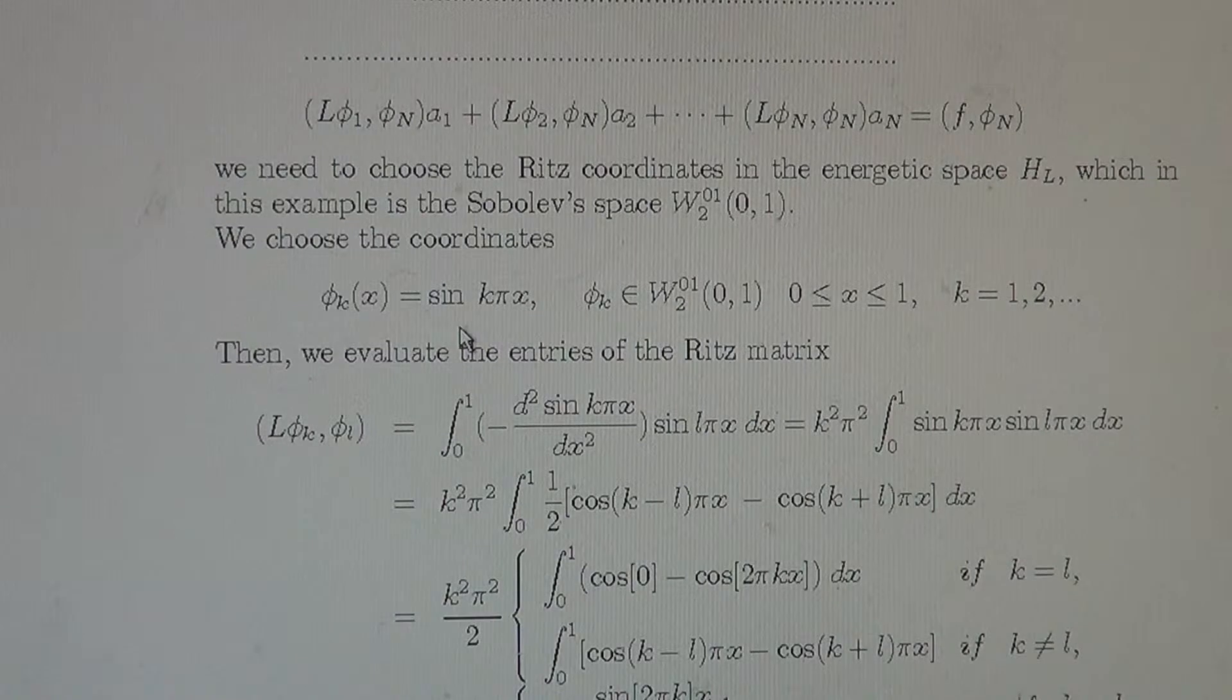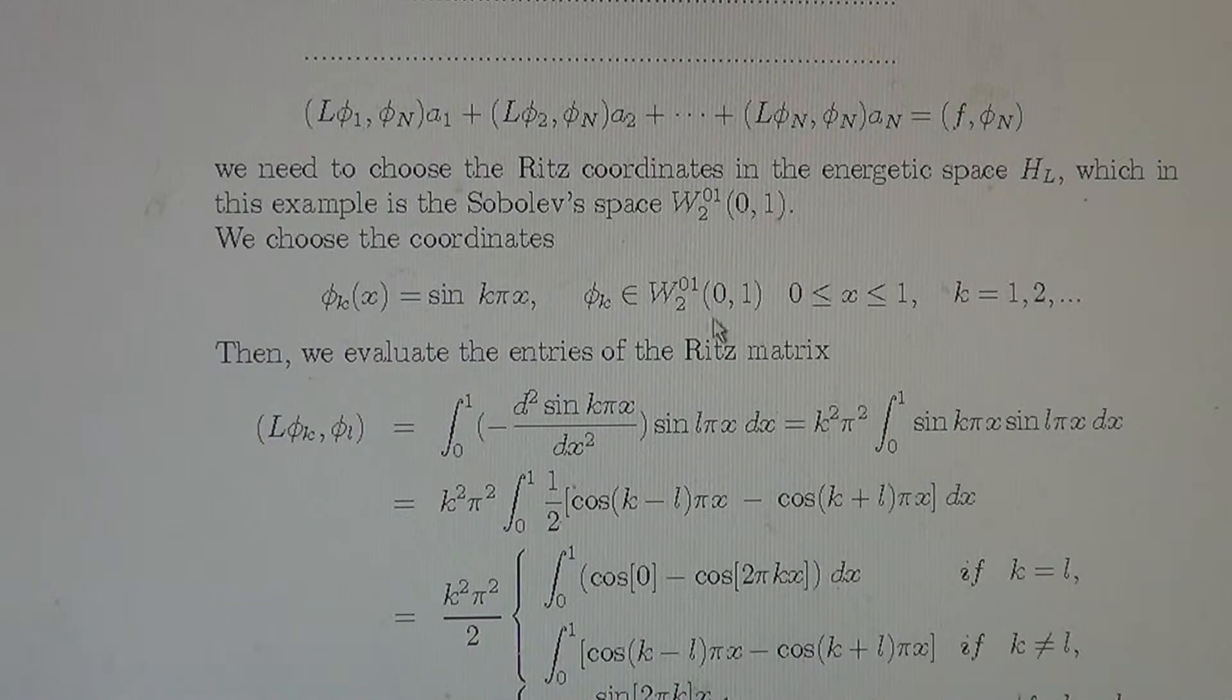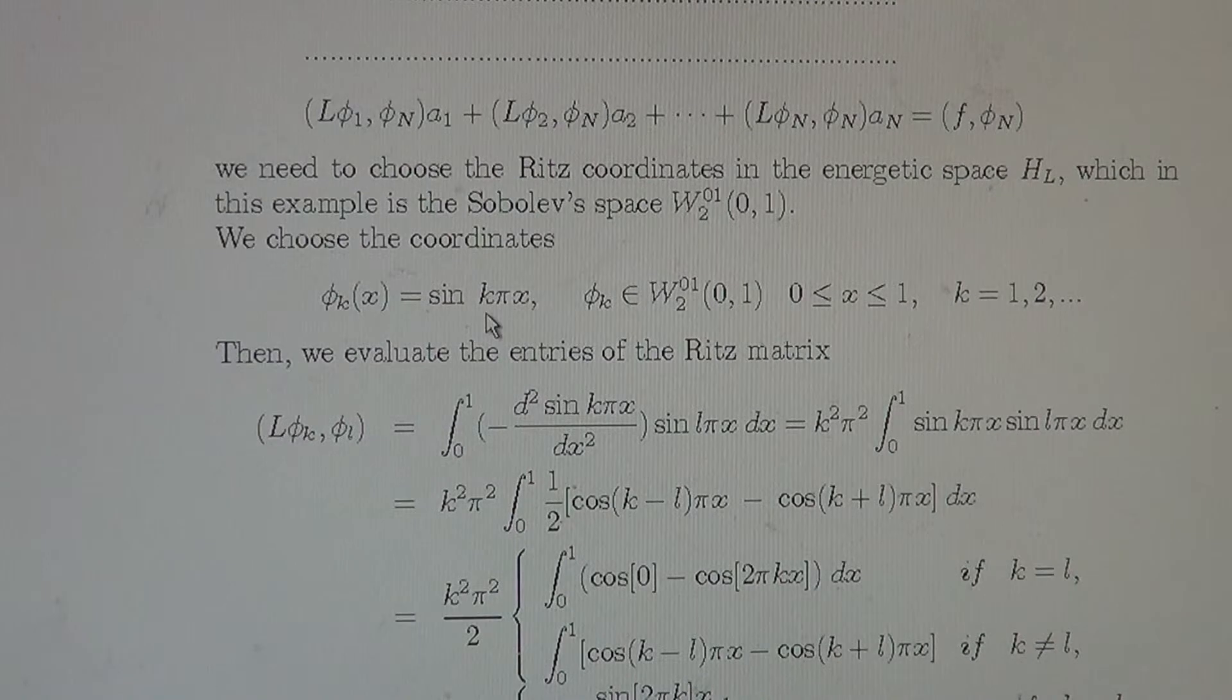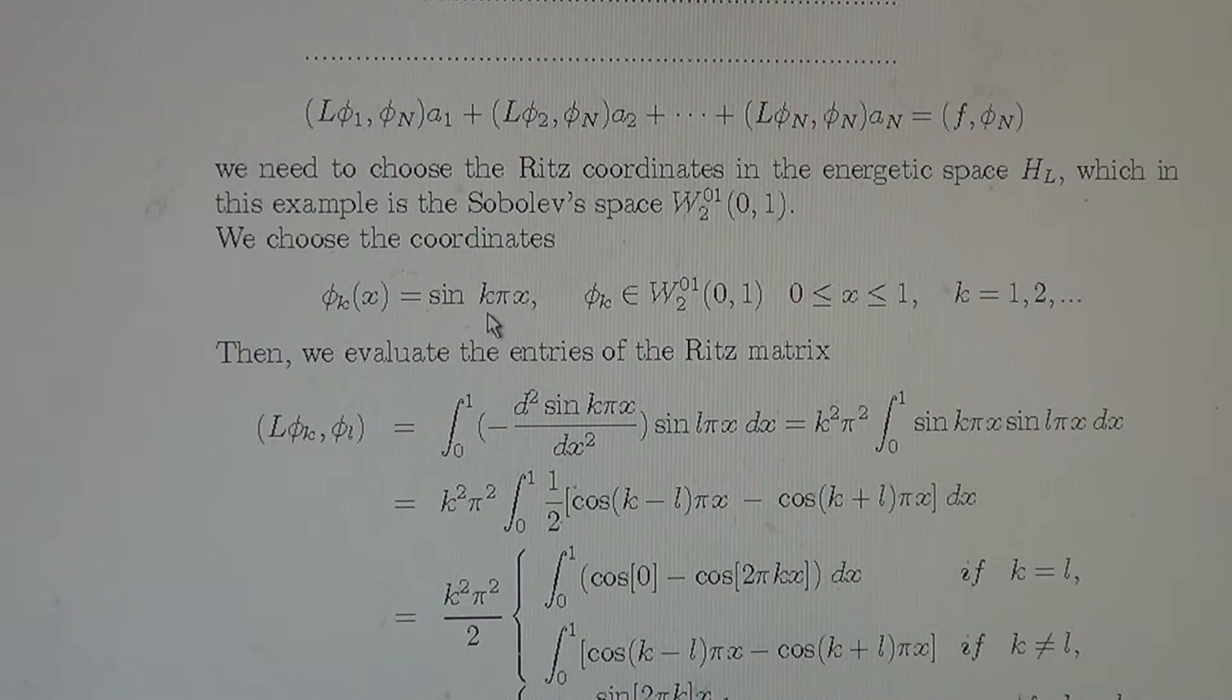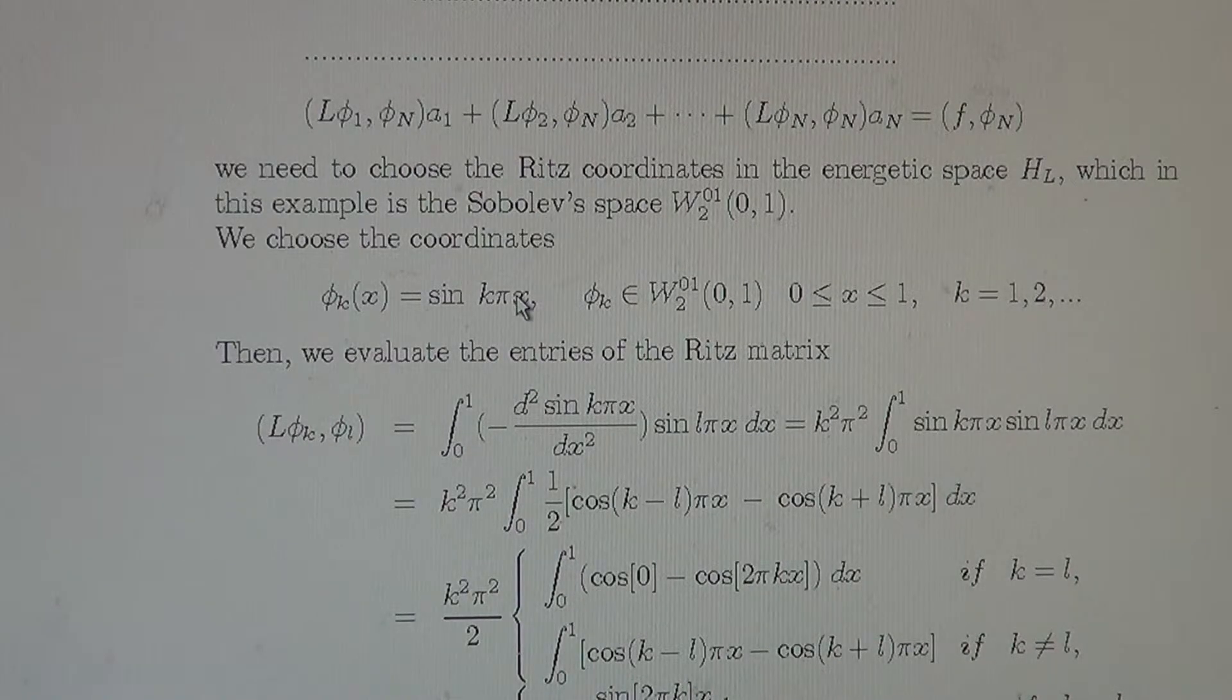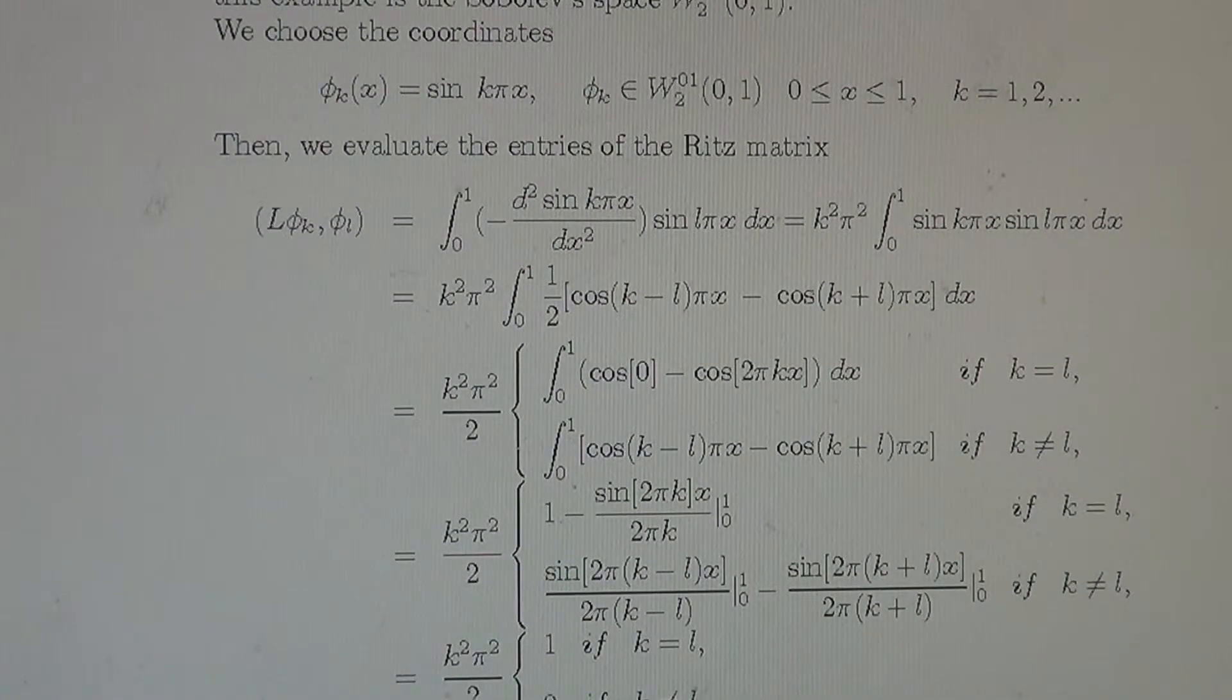So we choose the coordinates phi k equals sine k pi x. Sine is a very smooth function. Then it is the element of the Sobolev space. And that function satisfies the boundary value conditions, homogeneous boundary value conditions. At 0, sine 0 is 0 for all k. And at 1, sine k pi is 0 also for all k.